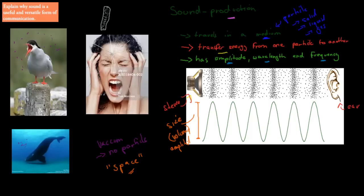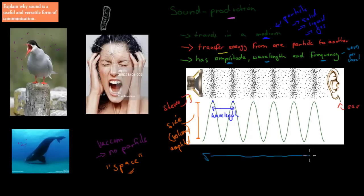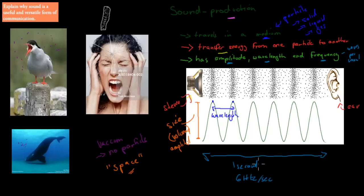Sound waves also have a wavelength, which is measured from peak to peak. And then there's frequency, which means waves per second. For example, if we say this here is one second, we count how many waves travel past a point — one, two, three, four, five, six. Six waves pass per second, so it travels at six hertz. Hertz is the unit for frequency; six hertz means six waves per second.